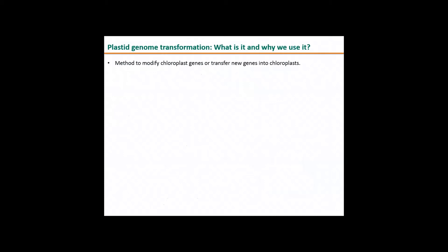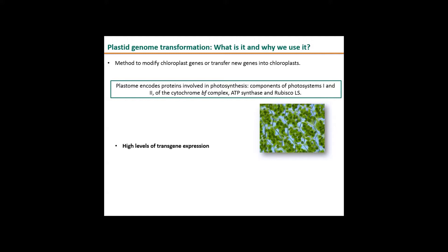Hello everyone. Today I'm going to be talking about what we do best in the Whitney lab after Rubisco catalysis assays: chloroplast transformation. What's a plastid genome transformation and what do we use it for? It's a method to modify chloroplast genes. We can modify the sequence, alter the arrangement, and even transfer new genes into chloroplasts. We're really interested in this technique because the plastome or chloroplast genome encodes for proteins involved in photosynthesis, such as components of photosystems 1 and 2, the cytochrome b6f complex, ATP synthase, and of course Rubisco large subunit.